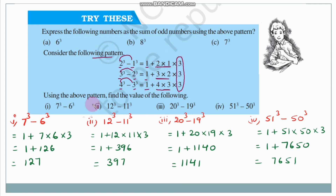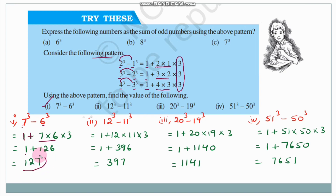Using the above pattern, find the value of 7³−6³. Apply the formula: 1 + 7×6×3 = 1 + 42×3 = 1 + 126 = 127. So the answer is 127.